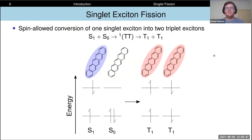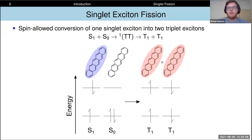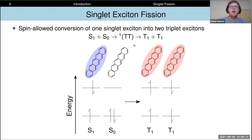The singlet fission I'm referring to is a spin-allowed photophysical process in which a single exciton localised on one chromophore can couple to an adjacent chromophore in its ground state to form two triplet excitons residing on neighbouring chromophores. This process is spin-allowed because it occurs through a correlated triplet pair intermediate state that has overall singlet character, and it's also an energy conserving process. The energy of each of these triplet excitons is approximately half that of the energy of the original singlet exciton.